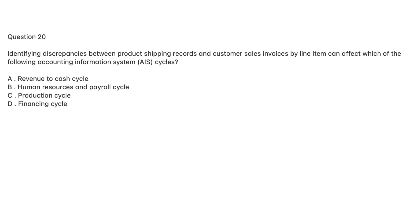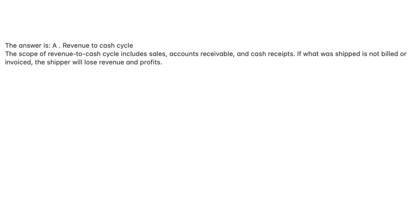Question 20. Identifying discrepancies between product shipping records and customer sales invoices by line item can affect which AIS cycle? A. Revenue to cash cycle. B. Human resources and payroll cycle. C. Production cycle. D. Financing cycle. The answer is A, revenue to cash cycle. The scope of the revenue to cash cycle includes sales, accounts receivable, and cash receipts. If what was shipped is not billed or invoiced, the shipper will lose revenue and profits.